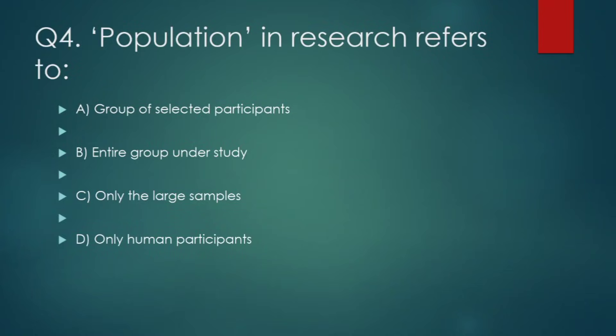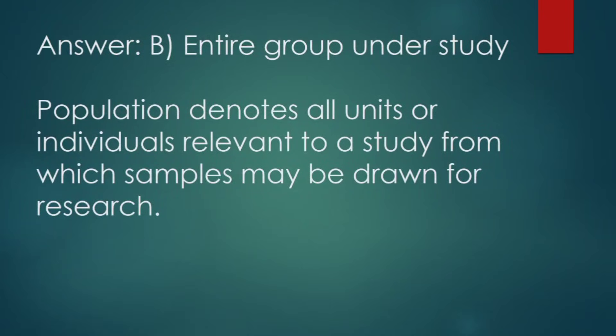Population in research refers to: (A) group of selected participants, (B) entire group under study, (C) only large samples, (D) only human participants. Correct answer: option B — entire group under study. Population denotes all units or individuals relevant to a study from which samples may be drawn for research.